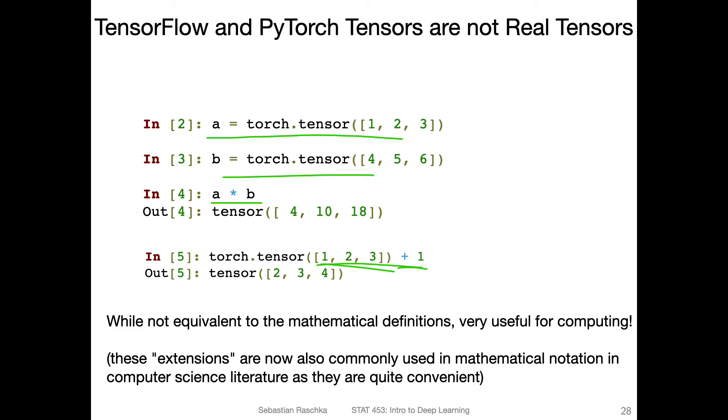The other one is adding a scalar to a vector. It will add the value one to each individual element in the vector, which is also convenient. You have to be a little bit careful about that. Sometimes it's easy to compute something that you don't intend. But in many cases, this makes life easier.